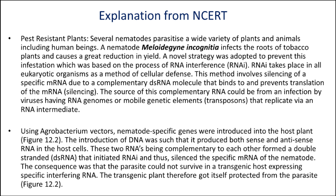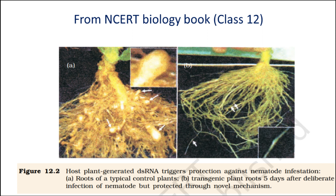Using Agrobacterium vectors, nematode-specific genes were introduced into the host plant. The introduction of DNA was such that it produced both sense and antisense RNA in the host cells. These two RNAs, being complementary to each other, formed a double-stranded RNA that initiated RNAi and thus silenced the specific mRNA of the nematode. The consequence was that the parasite could not survive in a transgenic host expressing specific interfering RNA.